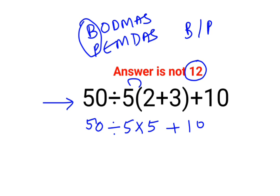So now a lot of people think that we can divide 50 by 5 multiplied by 5. So they think we should divide 50 by 25 plus 10. So 50 by 25 is 2 plus 10, the answer is 12.